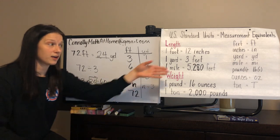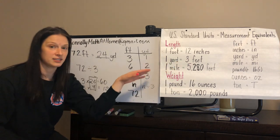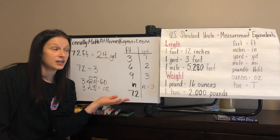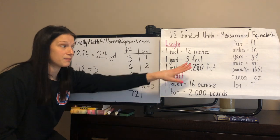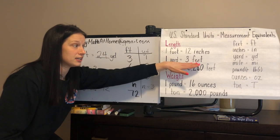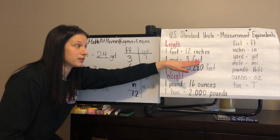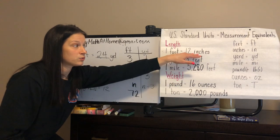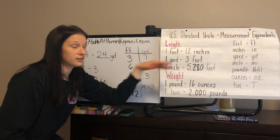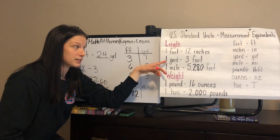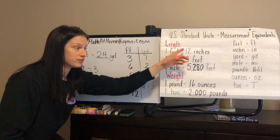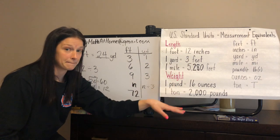Once you get comfortable with these, you won't have to make the table every time, but you should be thinking about what's happening to get from feet to yards. Three divided by three is one, and 12 divided by 12 is one. Or going the other way: one times three is three, one times 12 is 12.